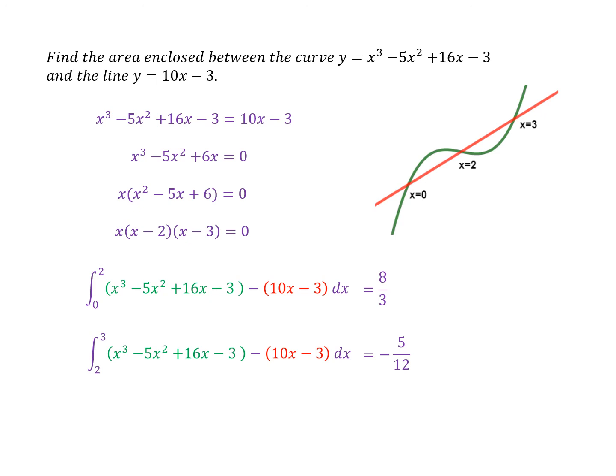...is eight thirds plus five twelfths, which is 37 over 12 square units. So that's the way I did it. It would have been possible on the second integral to integrate the red curve minus the green curve, and then you'd have got a positive number and you could have just added them to get the same answer. Okay, hope you did well with that question.